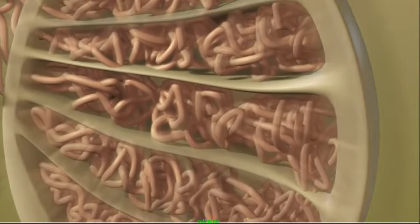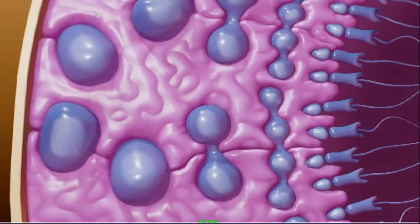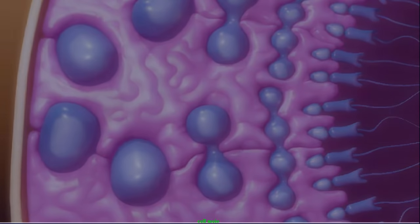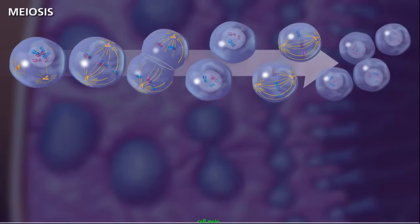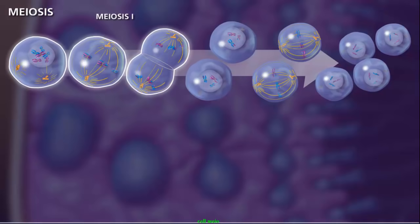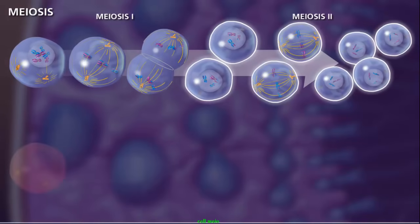Meiosis occurs in special cells called germ cells within the gonads of males and females. For the successful reduction in the number of chromosomes to occur in the new haploid daughter cells, two rounds of divisions are necessary. These divisions are termed meiosis I and meiosis II.